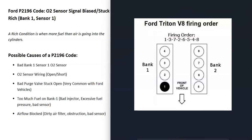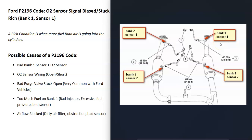The opposite of bank one would be bank two. If you have a four-cylinder engine it wouldn't matter — you'd only have one bank. It can be a good idea to get a diagram showing where all your oxygen sensors are located; it just makes it easier to find them. For example, on a 2004 F-150 4.6-liter, bank one sensor one is going to be right up before the catalytic converter.